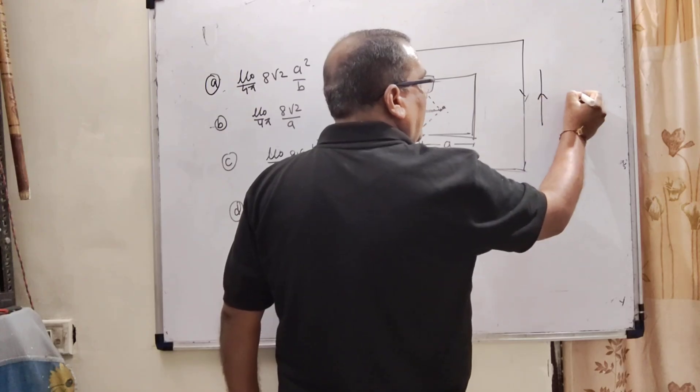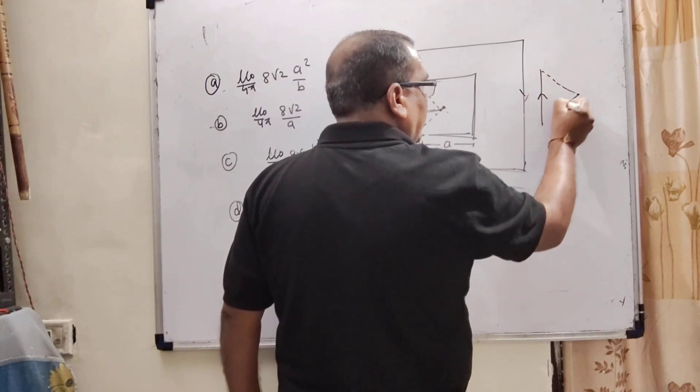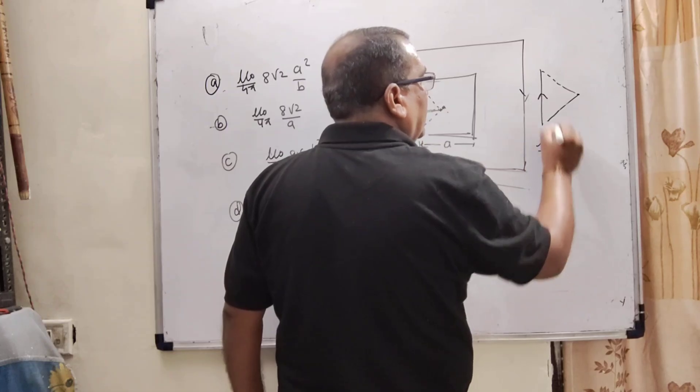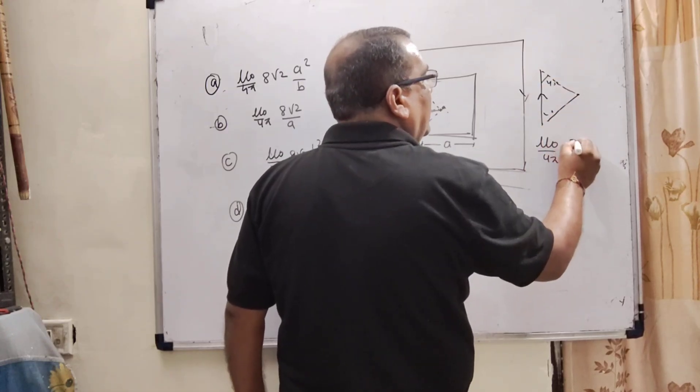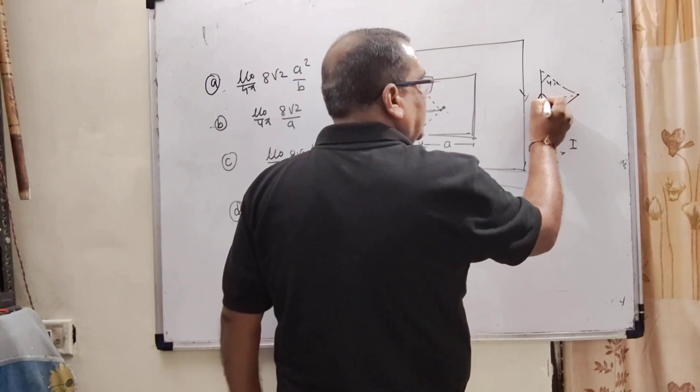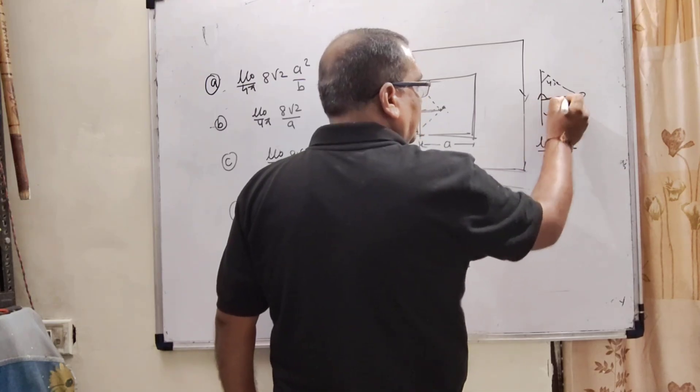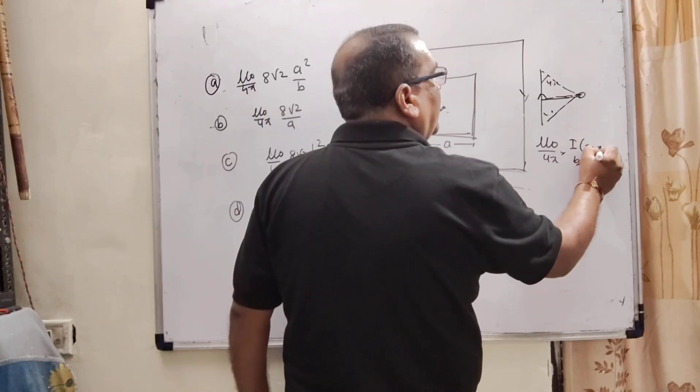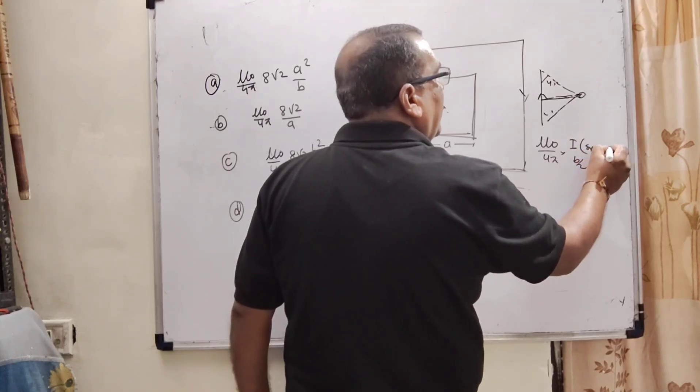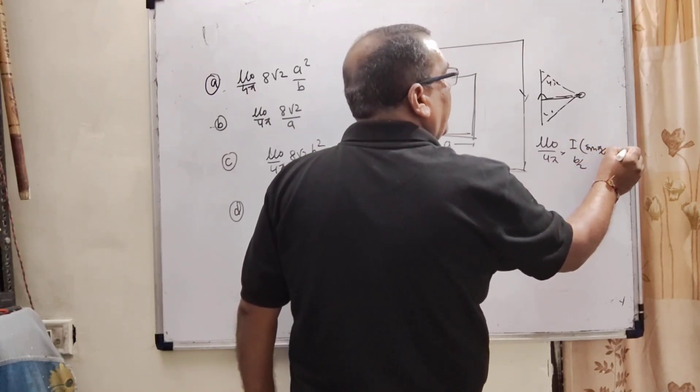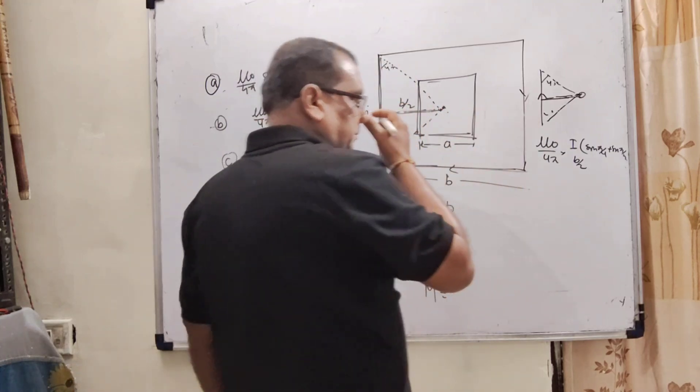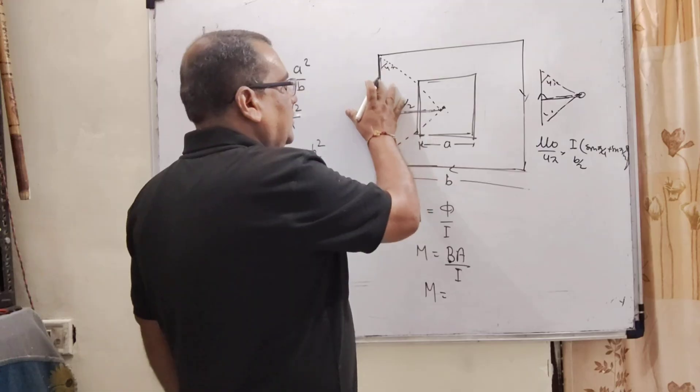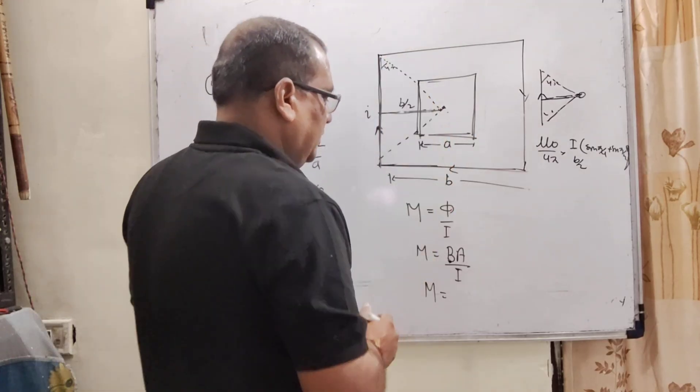So here magnetic field of long current carrying conductor we are using, that is μ₀/4π and this angle is 45 and I by this distance. What is this distance from the point of center? That is B/2 and sine 45 means sine π/4 plus sine π/4. And multiply by 4 because 1, 2, 3, 4.